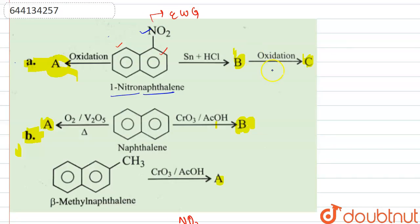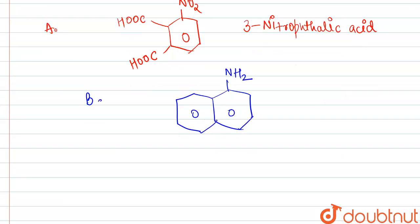This is further oxidized, giving C. So on oxidation, this ring will be oxidized and we will get phthalic acid: COOH, COOH. This is phthalic acid.